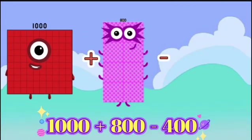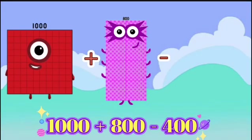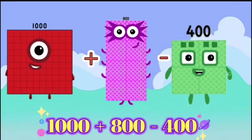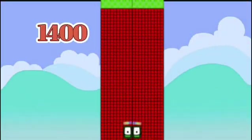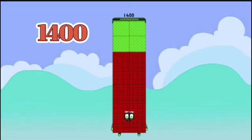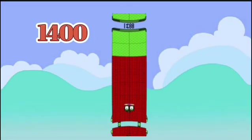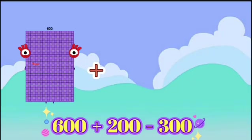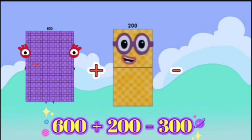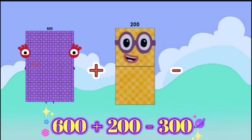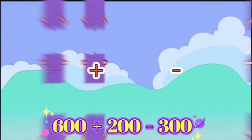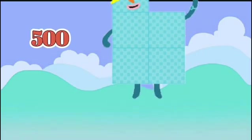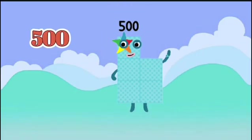1000 plus 800 minus 400 equals 1400. 600 plus 200 minus 300 equals 500.